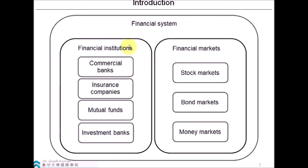Financial institutions are the main topic of this course. There are different forms of financial institutions, including commercial banks, insurance companies, mutual funds, investment banks, and different other types. We'll talk about them as we progress within this course. Now, talking about these two parts of the financial system — financial markets and financial institutions — we come to the distinction between direct finance and indirect finance. Whenever individuals or households buy shares or bonds of a corporation on the stock market or bond market through a stock broker, that is called direct finance, although a broker has to be involved in this case.